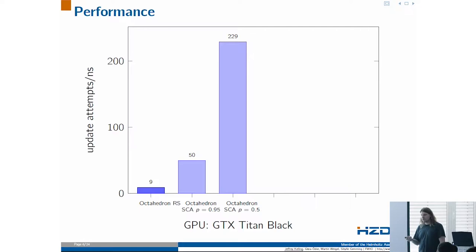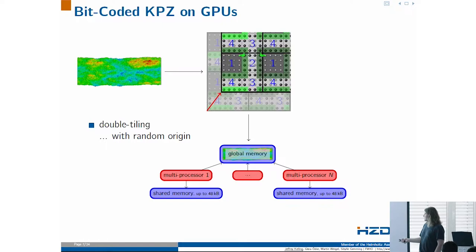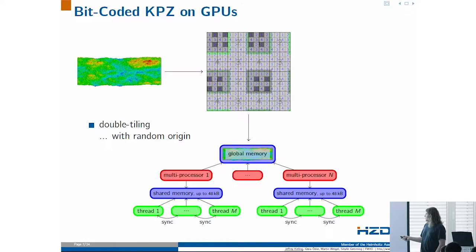In terms of implementation, we put the system into the global memory of the device and apply domain decomposition so we can update parts of the domain using a double tiling. We load domains into the shared memory of multiprocessors to update them while avoiding correlations. The decomposition origin is logically shifted after each sweep over the whole system so that borders don't always remain at the same place, preventing accumulation of errors. We then apply domain decomposition again at the thread level, being careful not to introduce correlations.